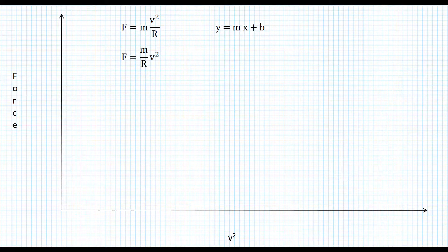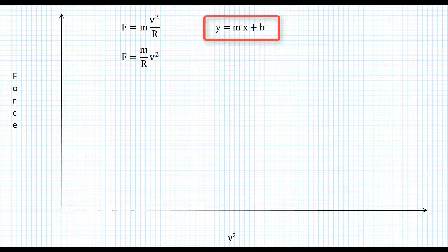We also know the equation of a line, y equals mx plus b. Y is whatever we're graphing on the y-axis, x is whatever we're graphing on the x-axis, m is the slope of the line, and b is the y-intercept.